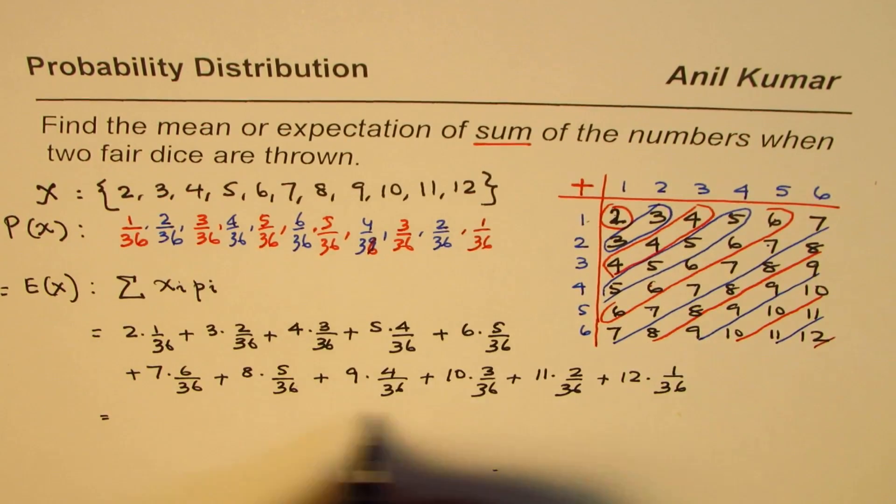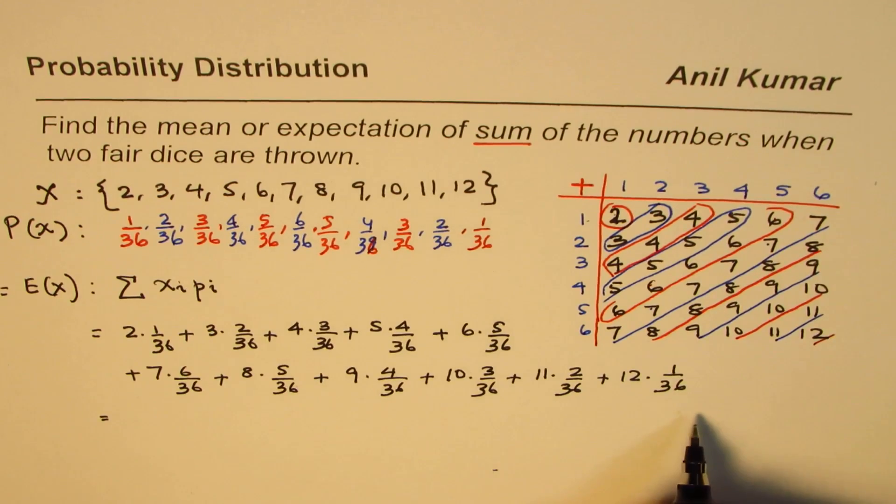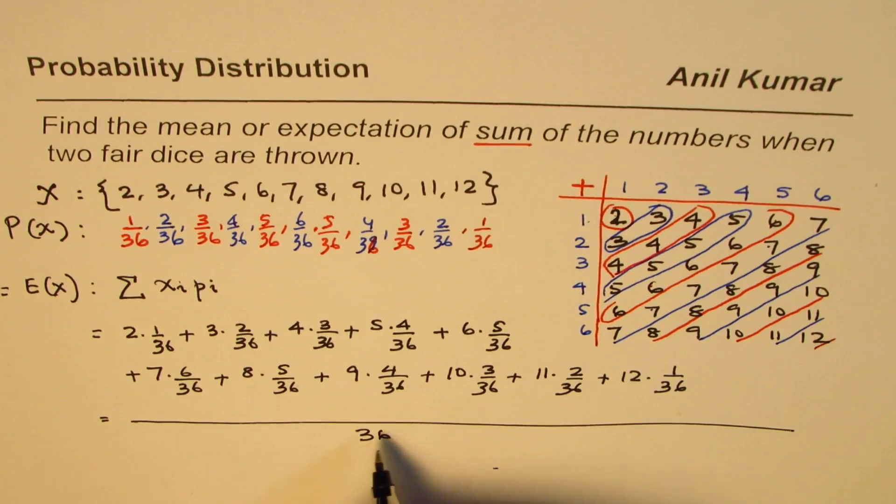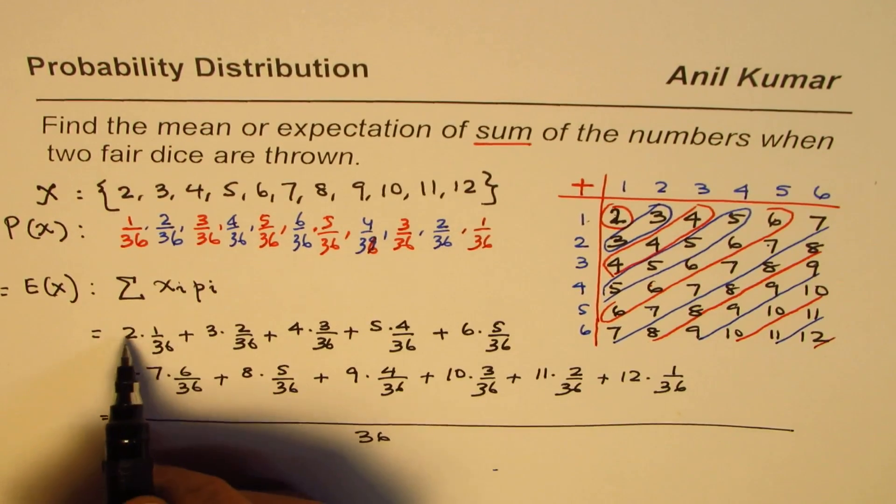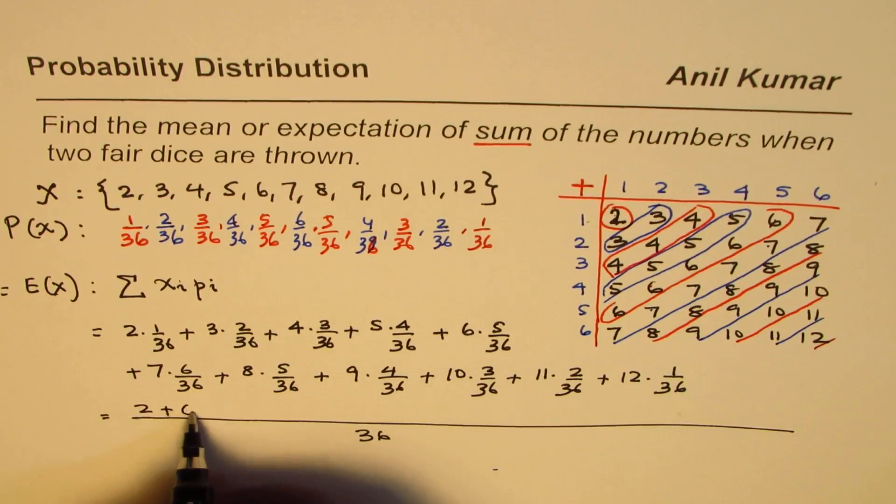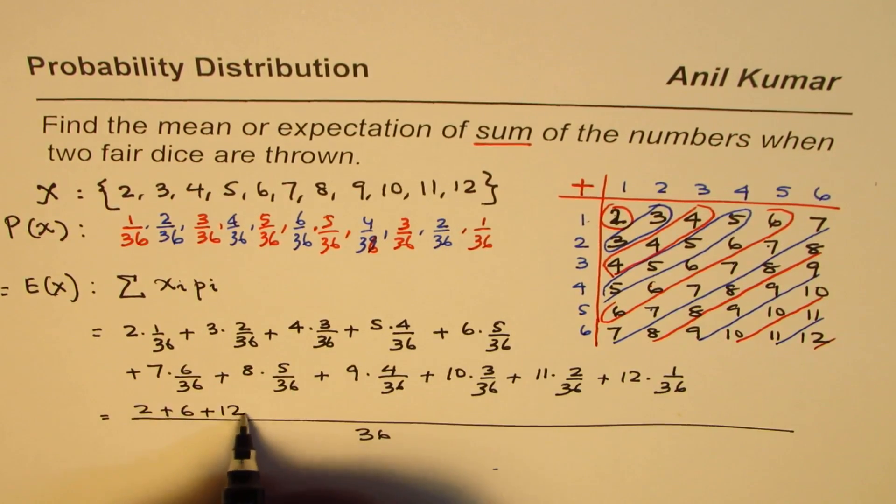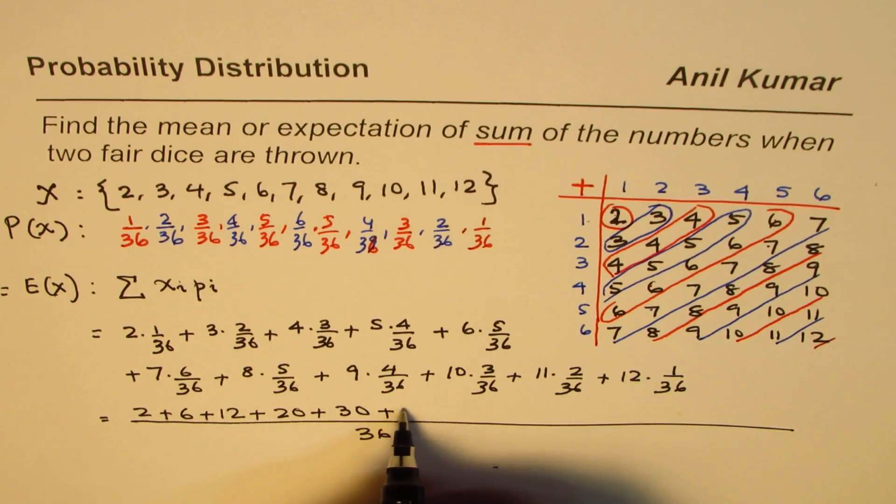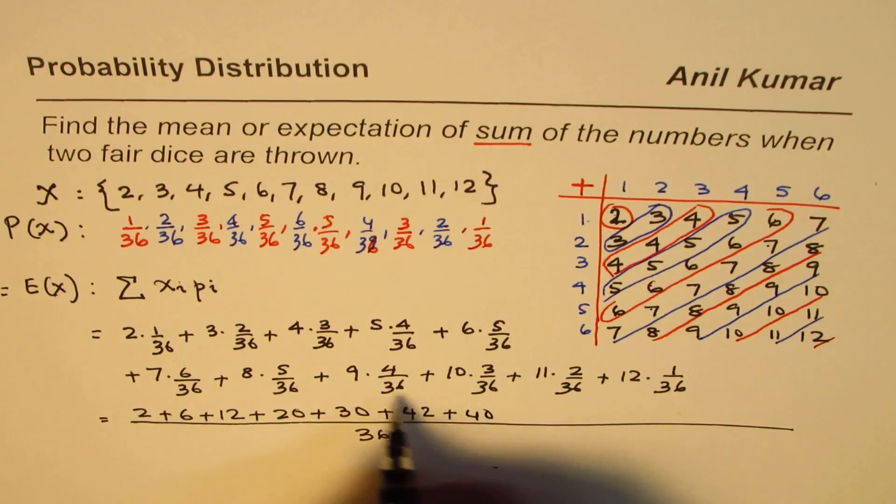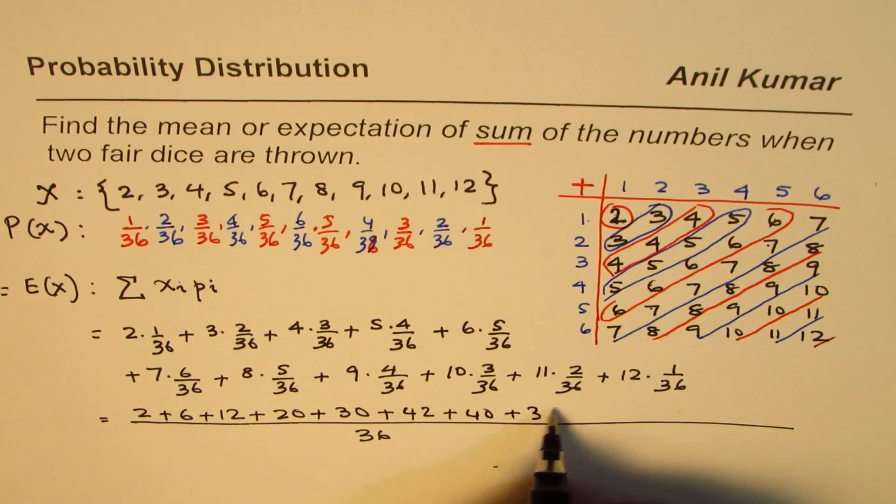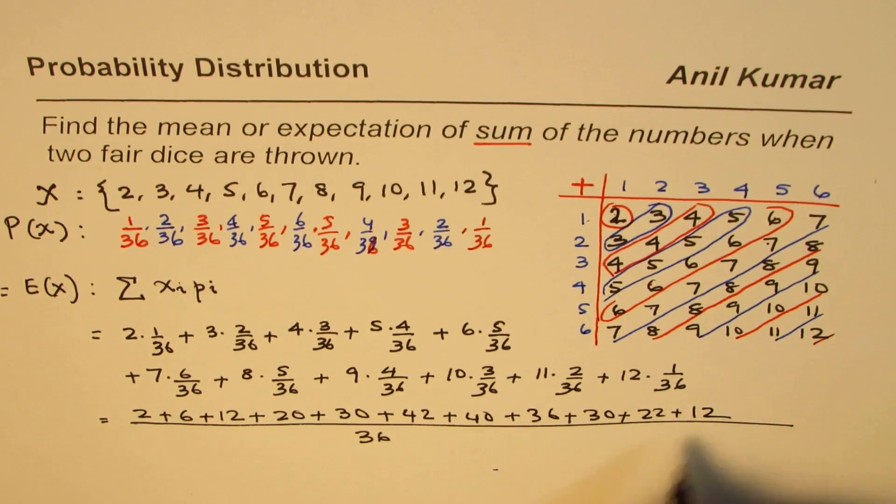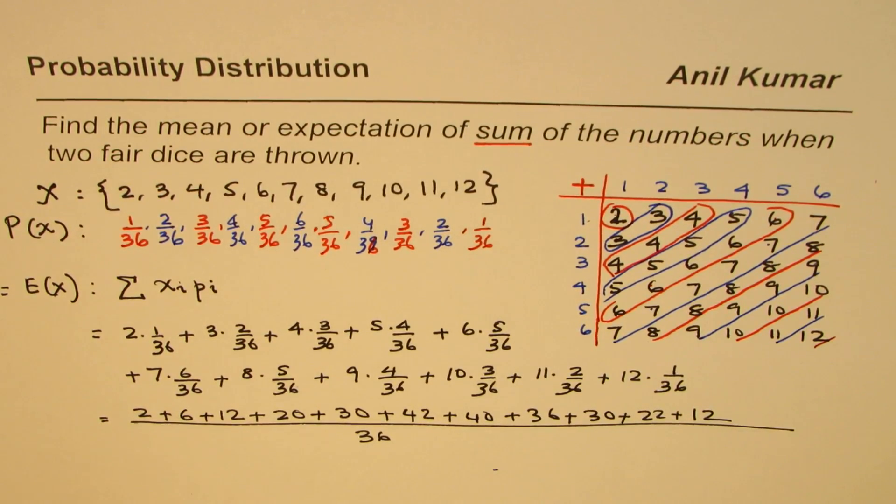Now we add them up to get the expected value. The common denominator is 36. The numerator is their product: 2 times 1 is 2, plus 3 times 2 is 6, plus 4 times 3 is 12, plus 5 times 4 is 20, plus 6 times 5 is 30, plus 7 times 6 is 42, plus 40, plus 36, plus 30, plus 22, plus 12. All this divided by 36.